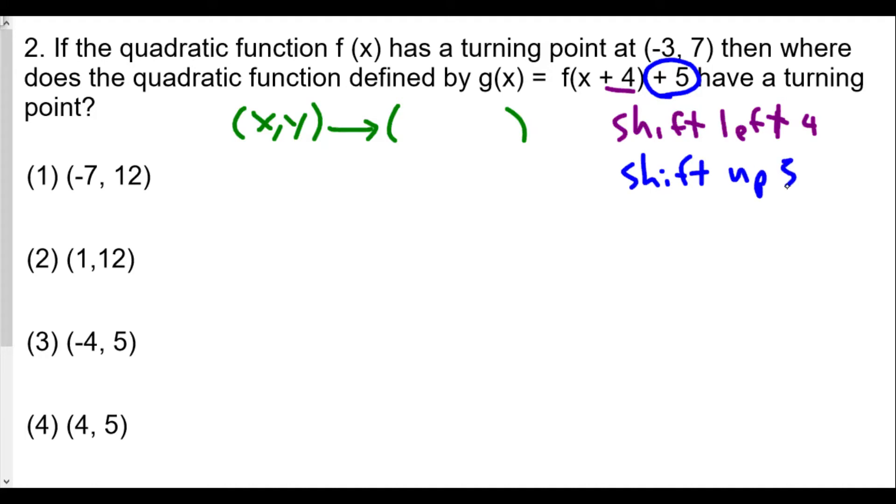So our translation becomes (x, y) becomes (x - 4, y + 5). We have our vertex of (-3, 7), and if we take away 4, we have -3 - 4, and then for the y value we have 7 + 5.